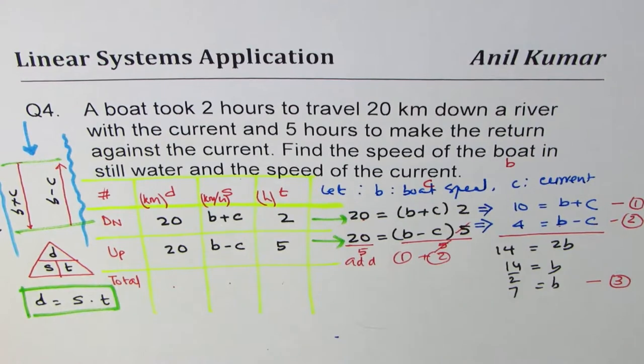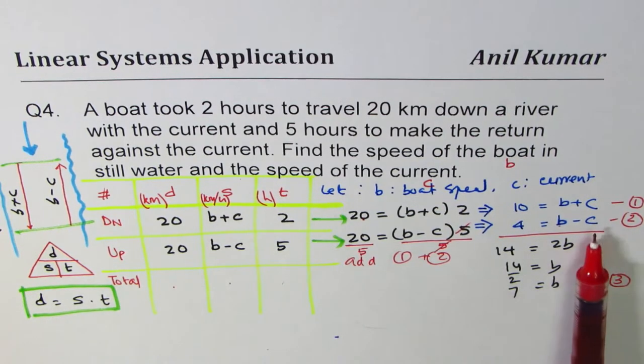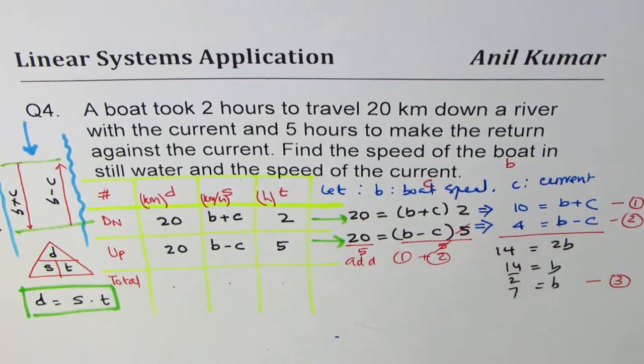So we appreciate the method. How systematically we are moving. So we got speed of the boat. Now how do you find the current of the river? You could use any one of these equations.